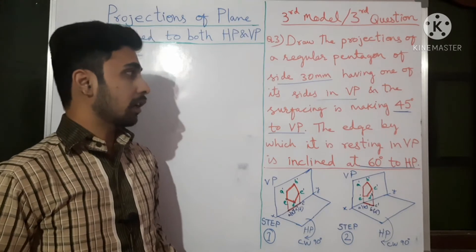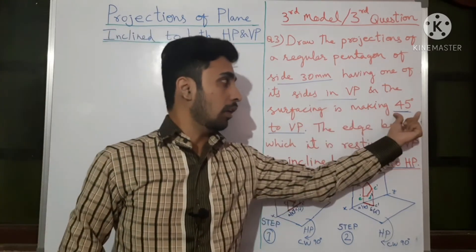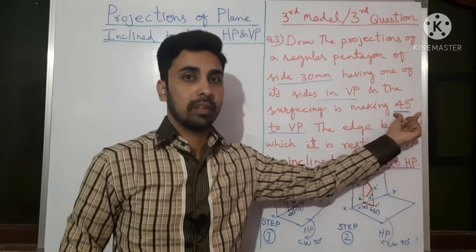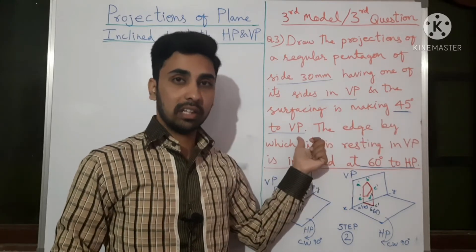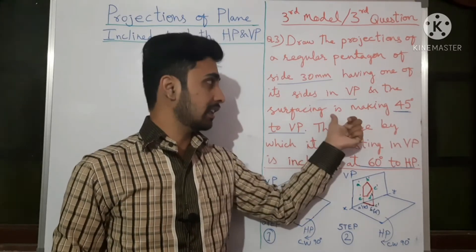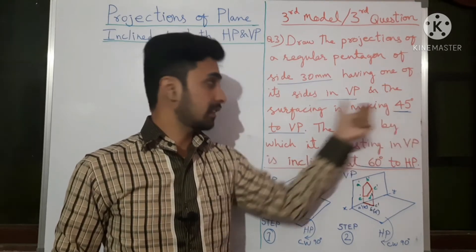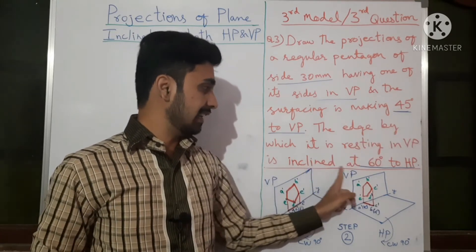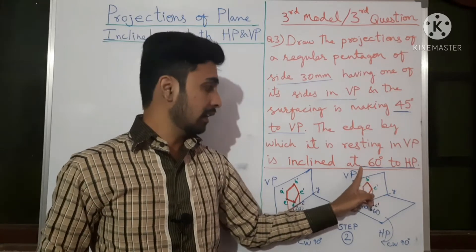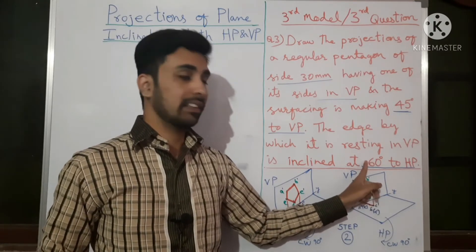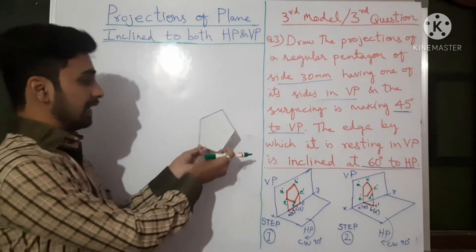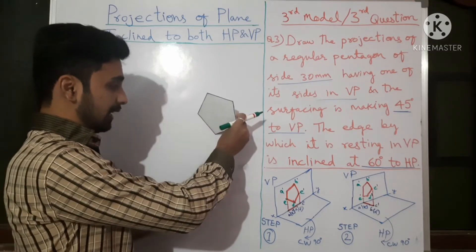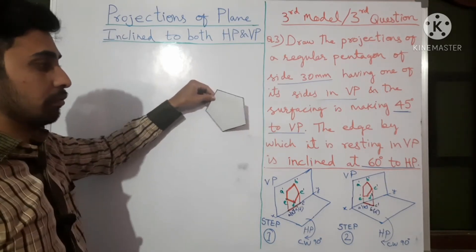As I said in previous classes, whatever surface angle is given — here 45 degrees — it should be assumed as zero degrees with respect to whichever plane it is given, whether HP or VP. Here the surface angle of 45 with respect to VP is to be assumed as zero degrees. The edge inclination — here 60 degrees — is to be assumed as 90 degrees. So the final position of the Pentagon has a surface angle of 45 degrees and edge inclination of 60 degrees.